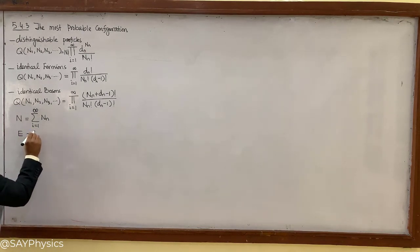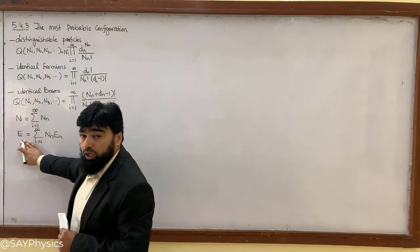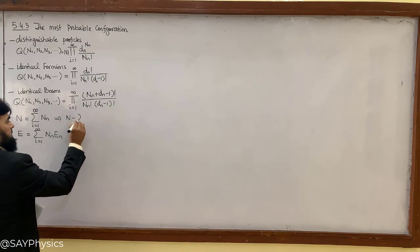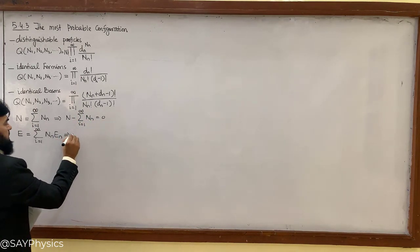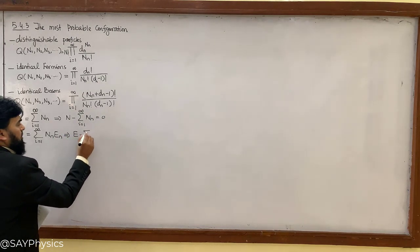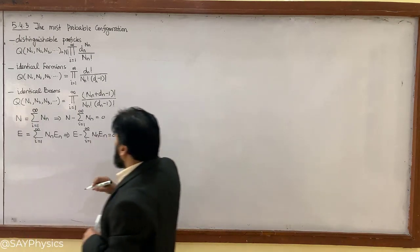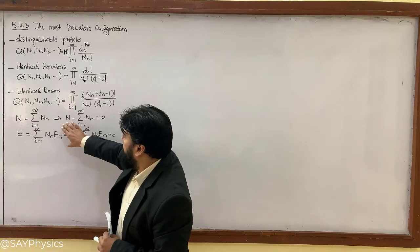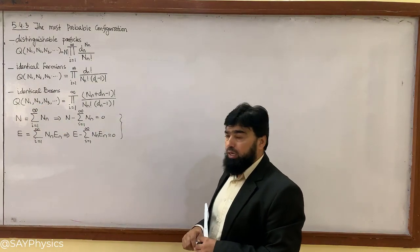The second constraint is that the total energy E_N equals the summation over i of N_N times E_N for each respective level — when we add up all the energies, the total must not exceed E. We write these as: N minus summation of N_N = 0, and E minus summation of N_N · E_N = 0. These are the two constraints under which we must maximize the configuration. To do this, we will use the method of Lagrange multipliers.